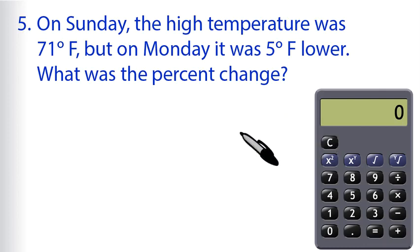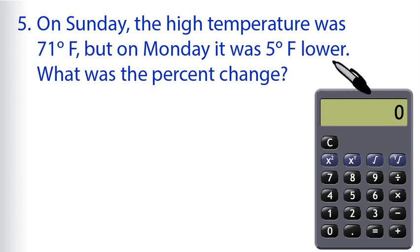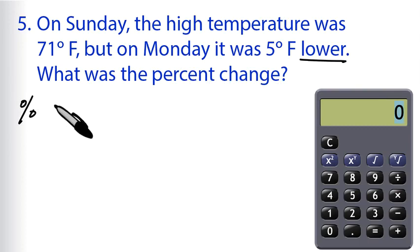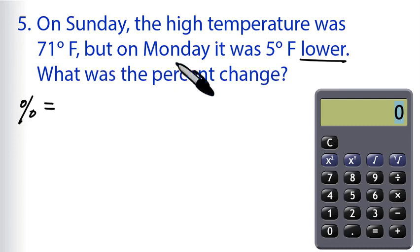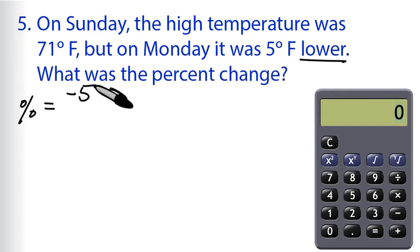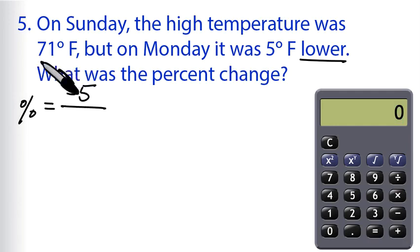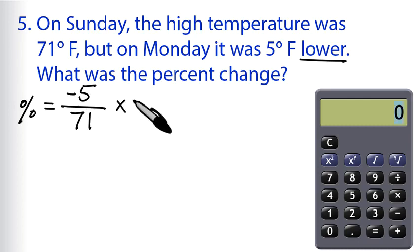For problem 5, we're allowed to use a calculator. On Sunday, the high temperature was 71 degrees Fahrenheit, but on Monday it was 5 degrees lower. That word 'lower' is important. What was the percent change? The change was 5 degrees lower, so lower means this is going to be negative — negative 5 — divided by the original amount, which was 71 degrees, then multiplied by 100.